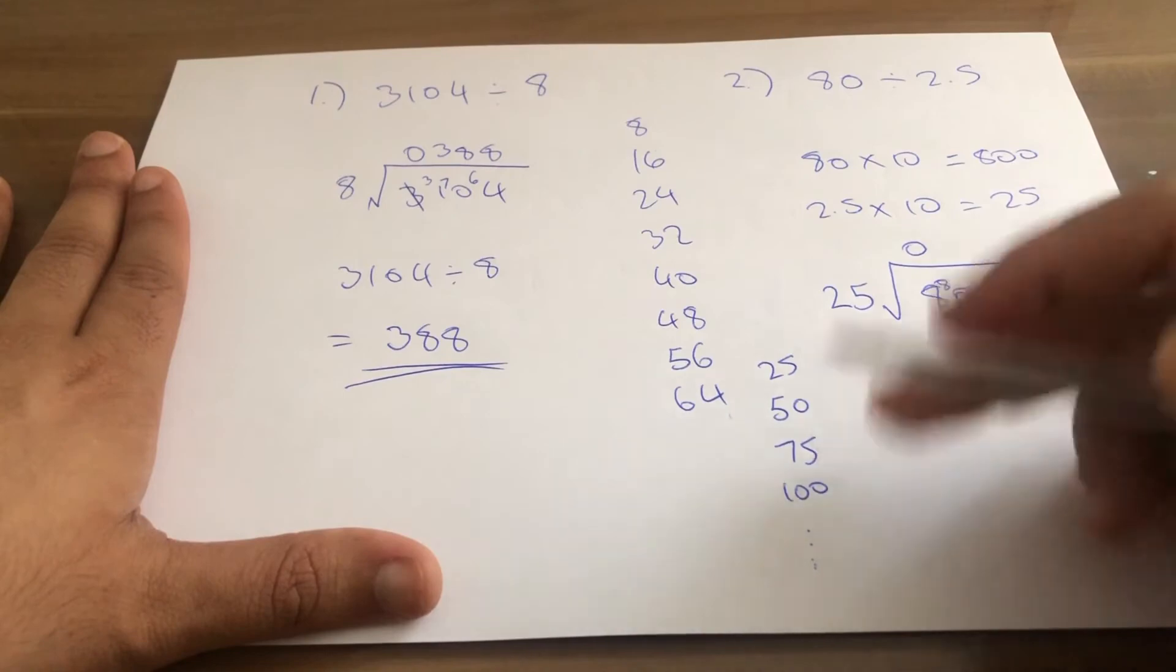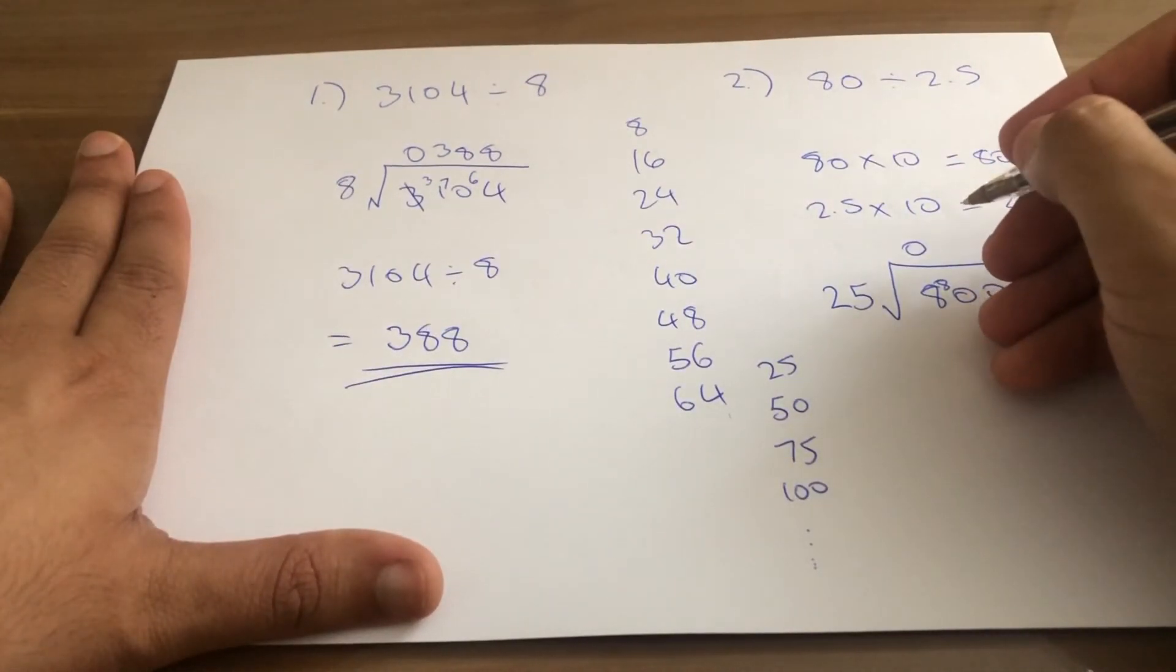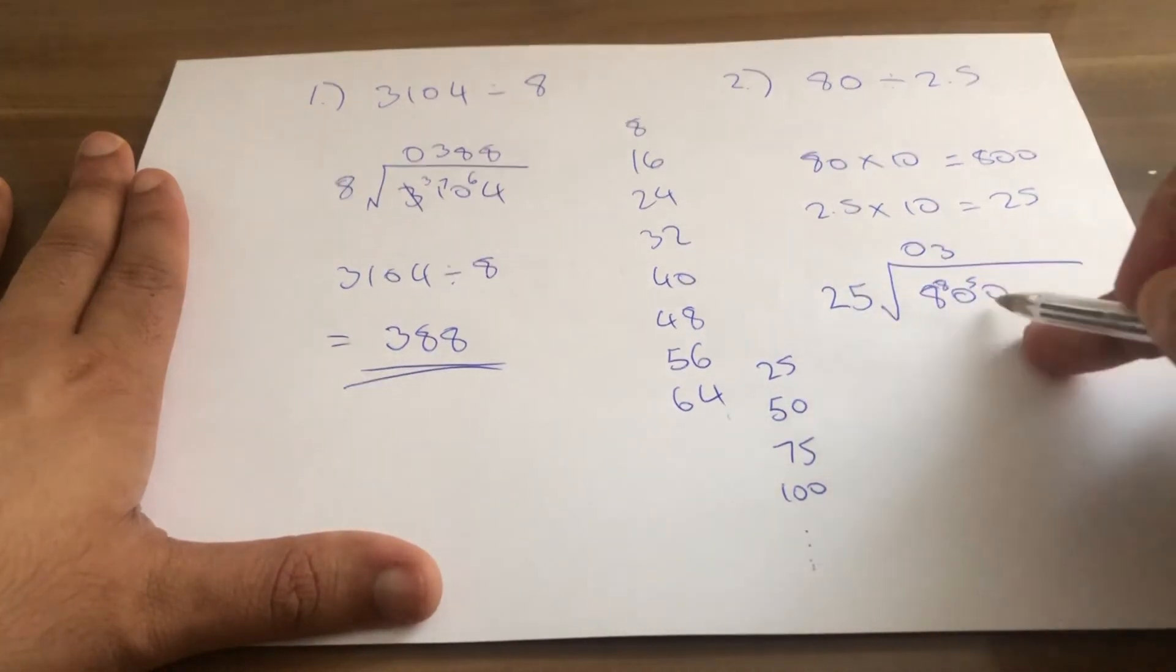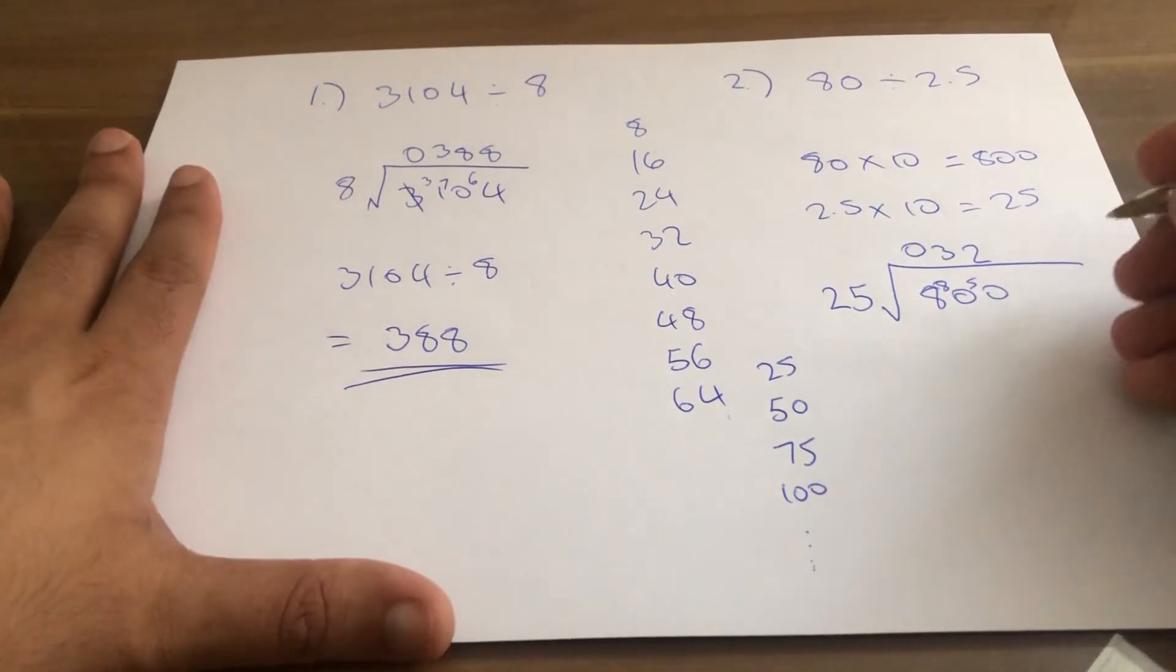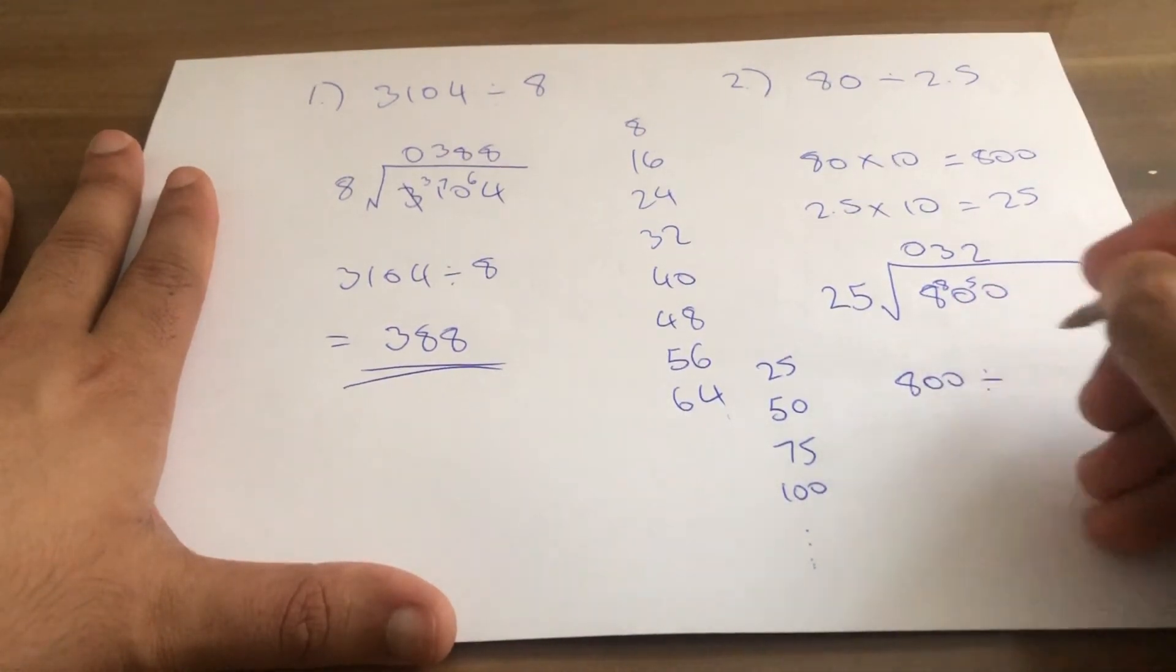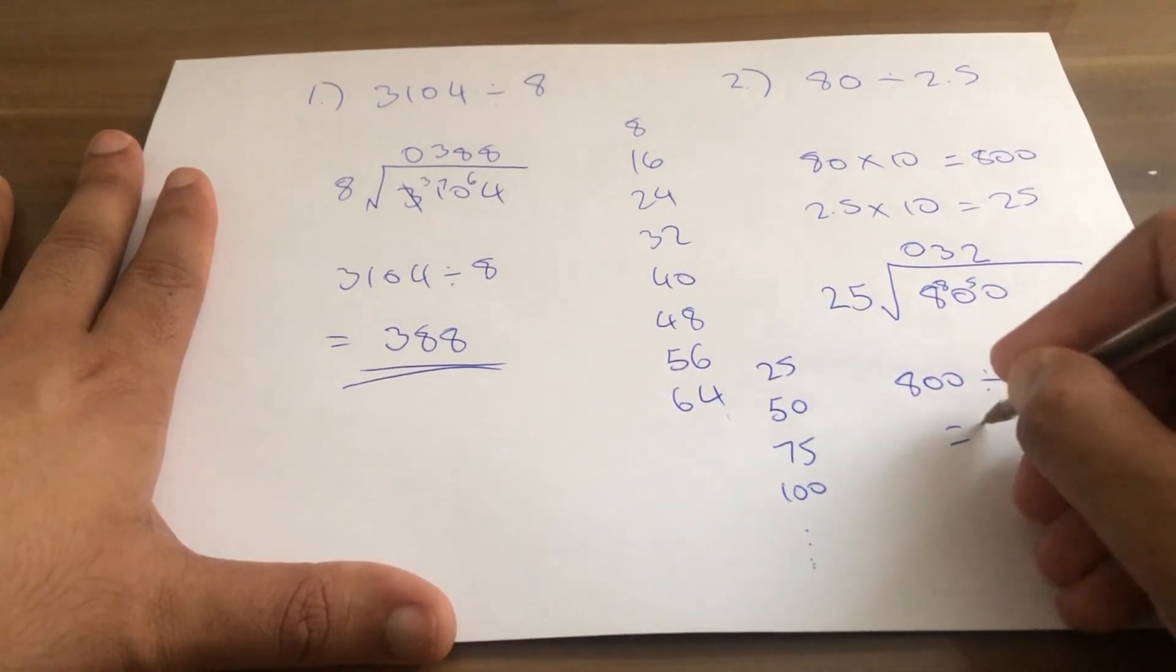1, 2, 3 times with remainder 5. How many times does 25 go into 50? 2 times. And so that's the answer. 800 divided by 25 gives us 32.